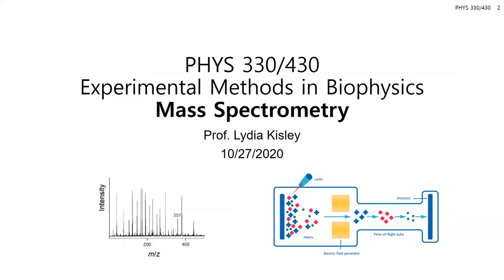This week we're focusing on mass spectrometry, which is a whole area of biophysics for identifying molecules and species based on their mass-to-charge ratios. This is a very hot area of study for proteomics, glycomics, and metabolomics, where people are identifying the proteins present and creating entire libraries of lipids or small molecule metabolites. Today we'll cover all the instrumentation components for mass spectrometry.